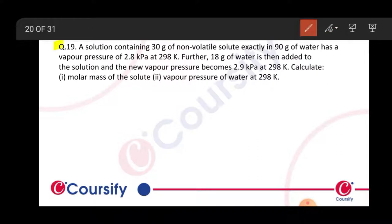A solution containing 30 gram non-volatile solute in exactly 90 gram water has vapor pressure 2.8 kilopascal. Further, 18 gram water is added, then the solution's new vapor pressure becomes 2.9 kilopascal. Calculate the molar mass of solute and vapor pressure of water at 298 kelvin.